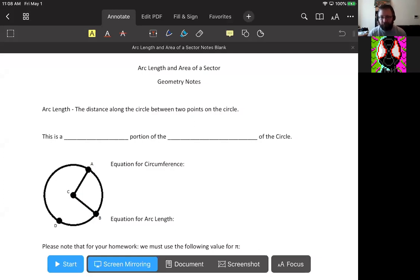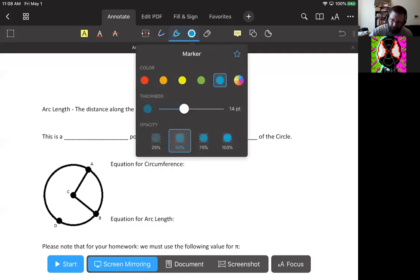once that assignment from that Friday is turned in, then geometry is over if everything is done and everything is a 70%. So today we are talking about arc length. Start with arc length today.